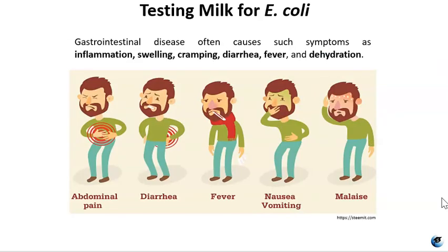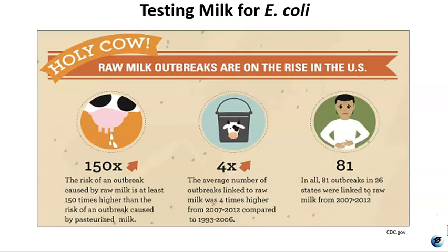This figure shows an overview of common symptoms associated with GI disease, including inflammation, swelling, cramping, diarrhea, fever, dehydration, and malaise. Milk from a cow can sometimes be laden with bacteria, including E. coli. Bacteria can enter milk from the skin on the teats of the cow, directly from the milk if the cow has mastitis or a bacterial infection of the udder, or via fecal contamination. Fecal contamination can lead to other types of infection, including pathogenic strains of Clostridium, Listeria, or Norovirus. For these reasons, the risk of an outbreak caused by raw milk is at least 150 times higher than the risk associated with pasteurized milk. Here's a short video discussing the dangers of raw milk.